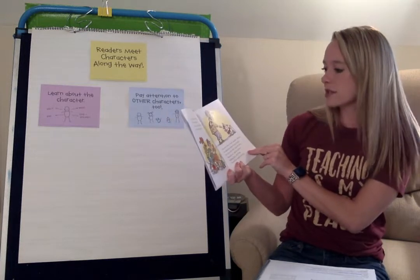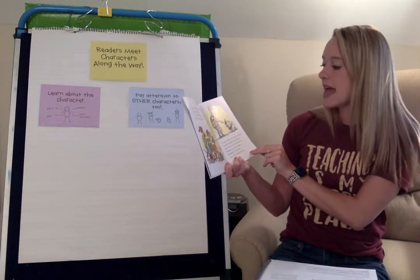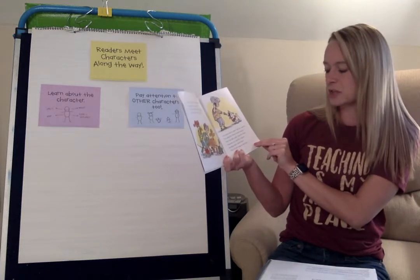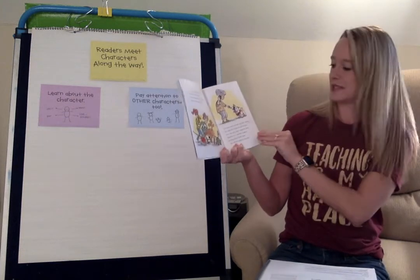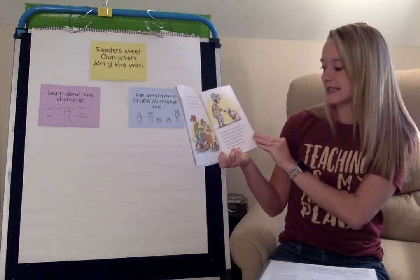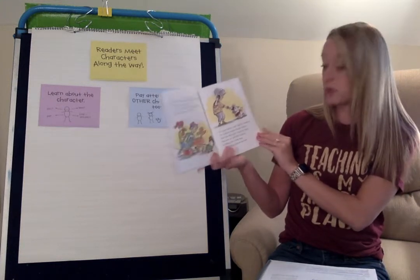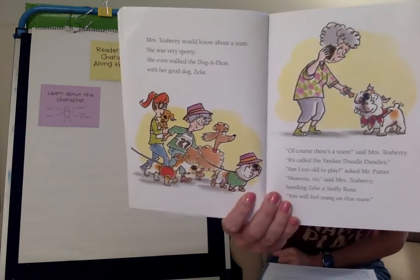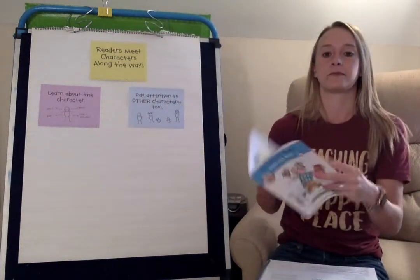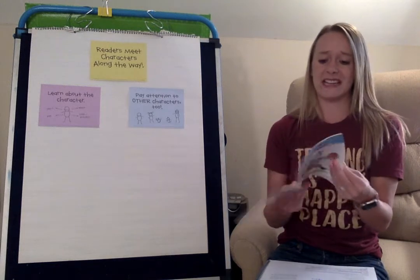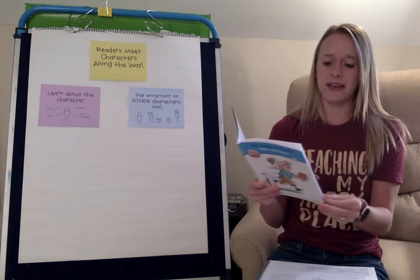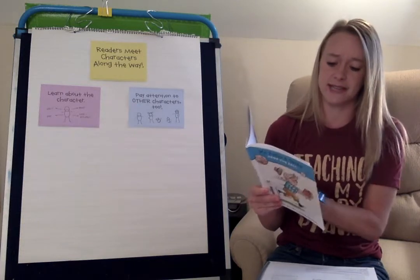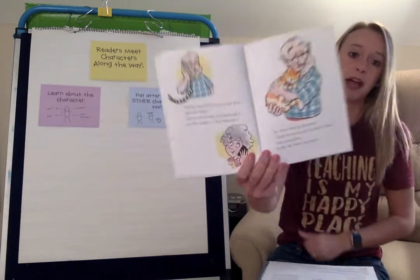'Of course there's a team,' said Mrs. T-berry. 'It's called the Yankee Doodle Dandies.' 'Am I too old to play?' asked Mr. Putter. 'Heavens no,' said Mrs. T-berry, handing Zeke a sniffy bone. 'You will feel young on that team.' 'Will my knees feel young on that team?' asked Mr. Putter. 'You are not too old and neither am I,' said Mrs. T-berry. 'We'll both play.'